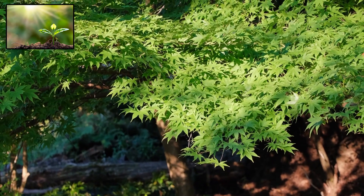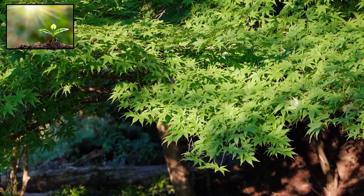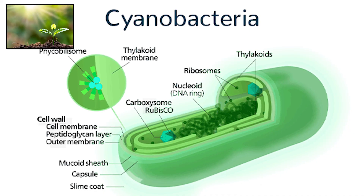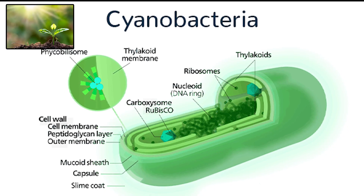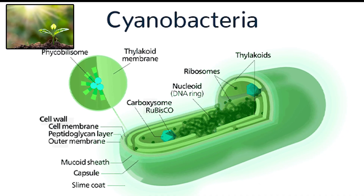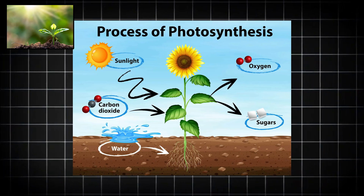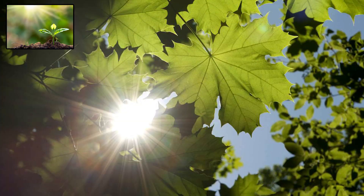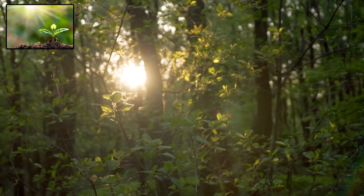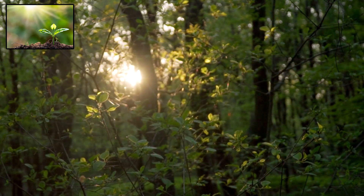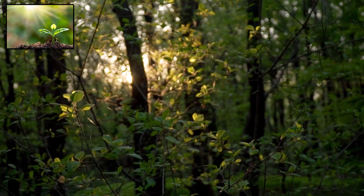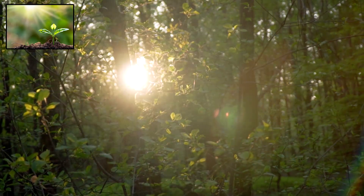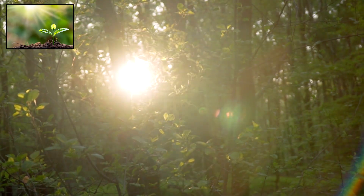This evolutionary trait first appeared in bacteria over 3 billion years ago, with cyanobacteria being the early adopter. These tiny microbes started using sunlight, carbon dioxide, and water to produce energy, and as a byproduct, they released oxygen. Over millions of years, this oxygen slowly transformed Earth's atmosphere, making it breathable for future lifeforms and paving the way for more complex organisms.